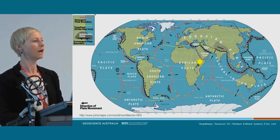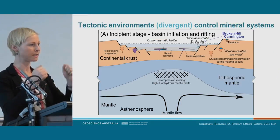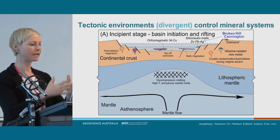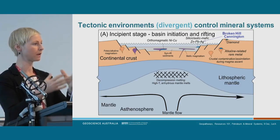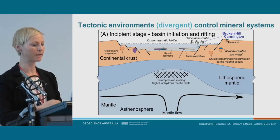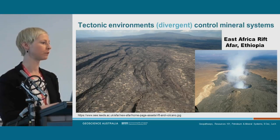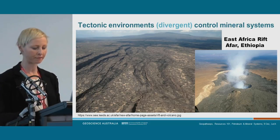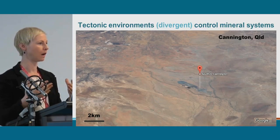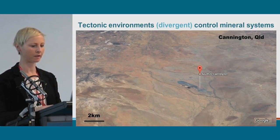Finally, the East African Rift, where continental crust is being pulled and stretched, heated from below, creating mineral deposits. Broken Hill and Cannington in Queensland were formed in this way. Here we have the East African Rift in Afar with volcanoes and huge lava fields, and here we have Cannington in Queensland — a very old and eroded landscape with a few rivers creeping over the top.